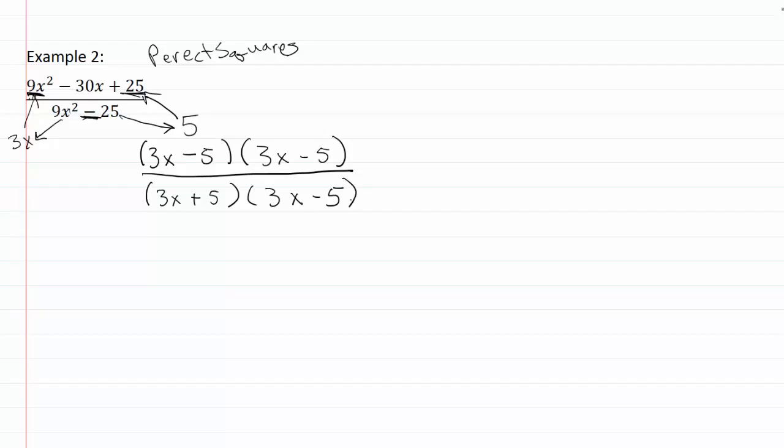So again we want to divide out anything that completely matches. These two completely match, so then our final answer is going to be this rational expression right here, successfully reduced.